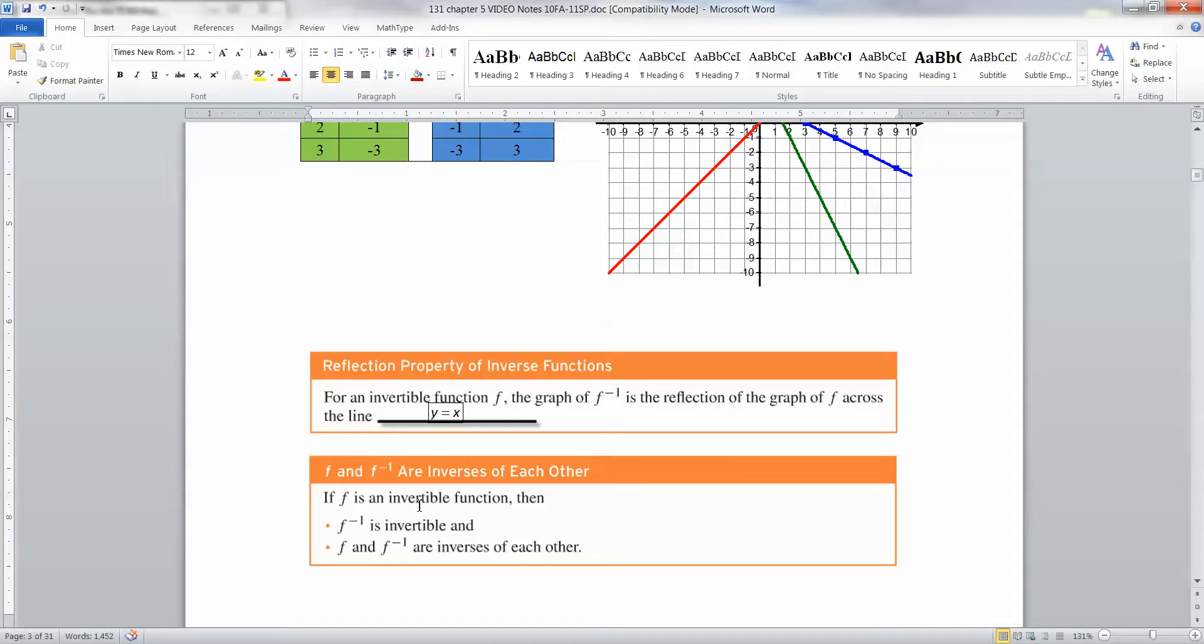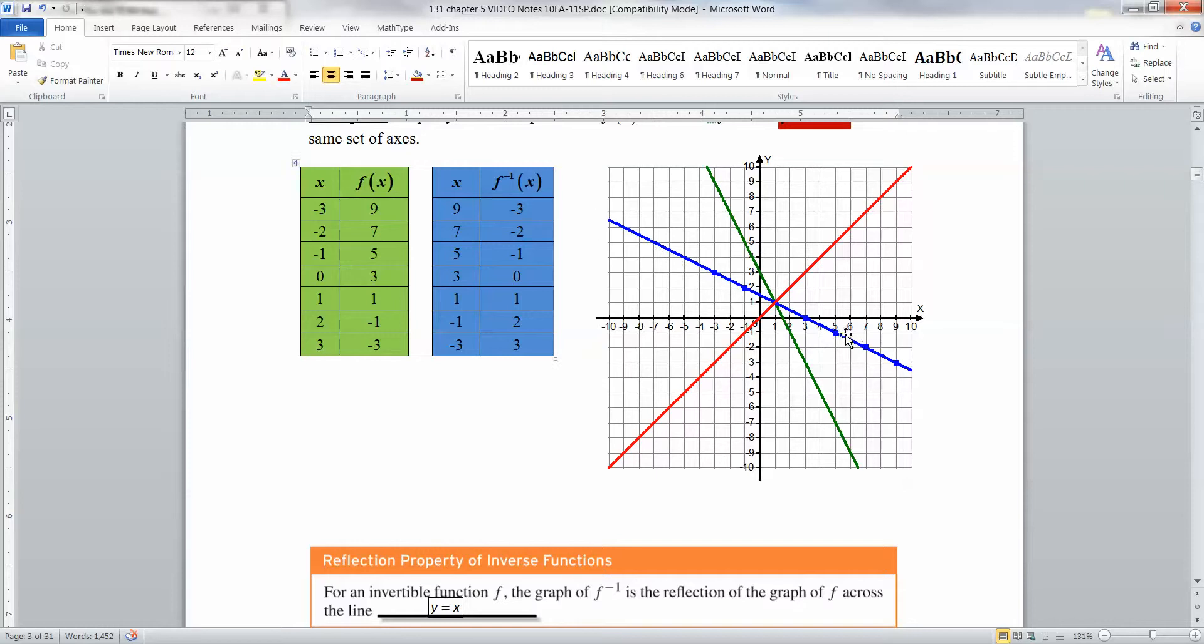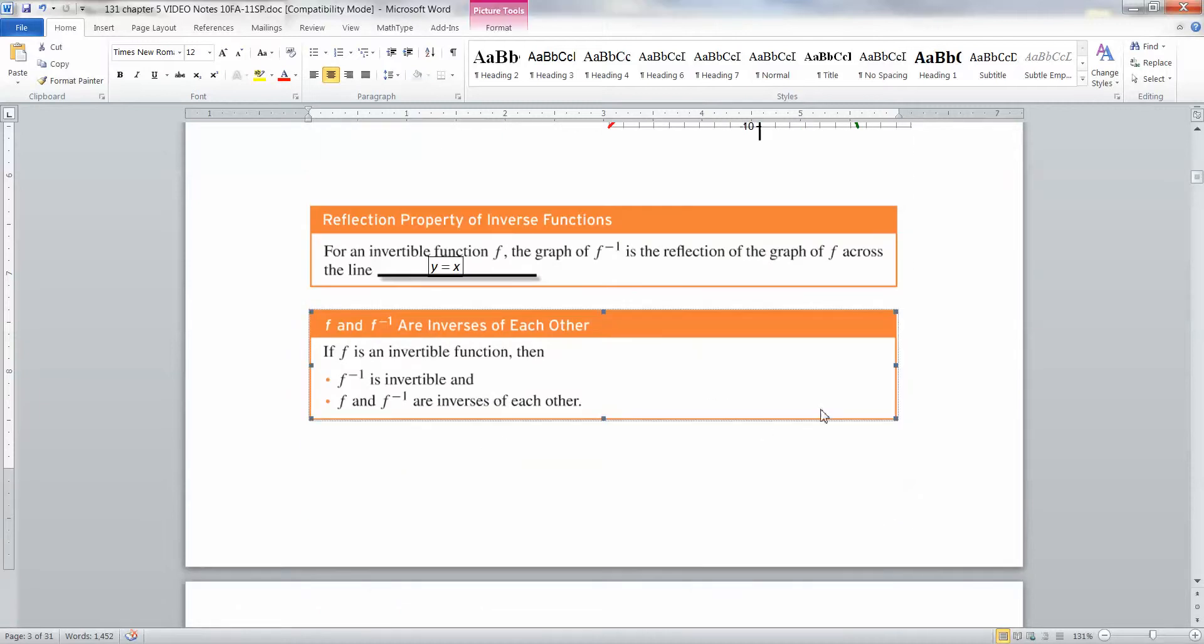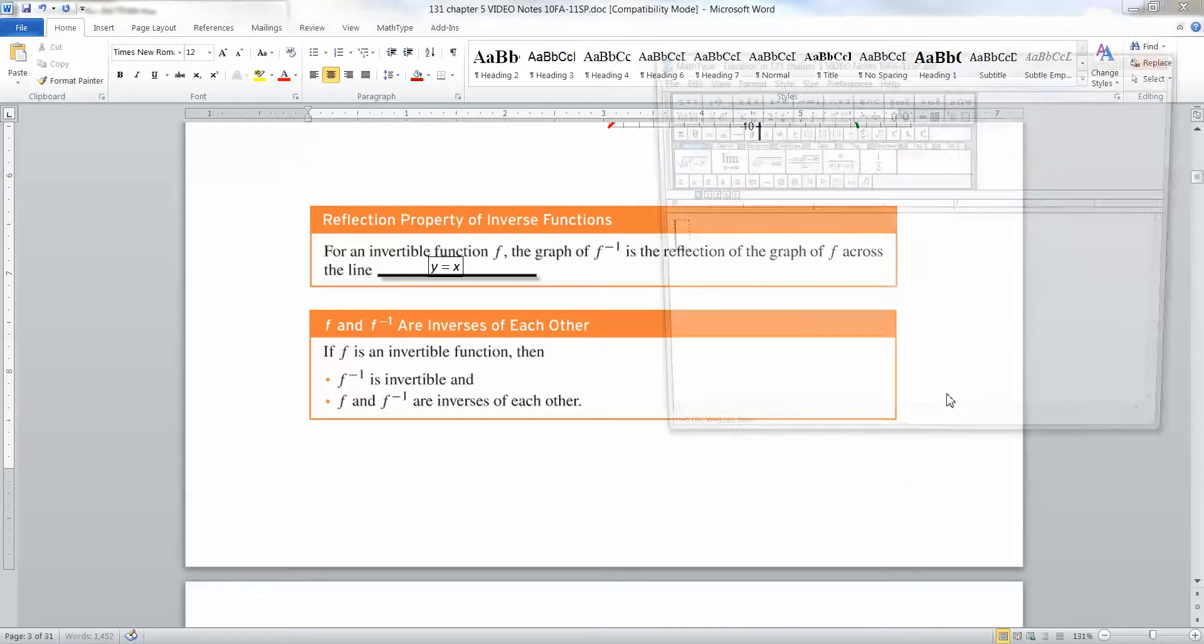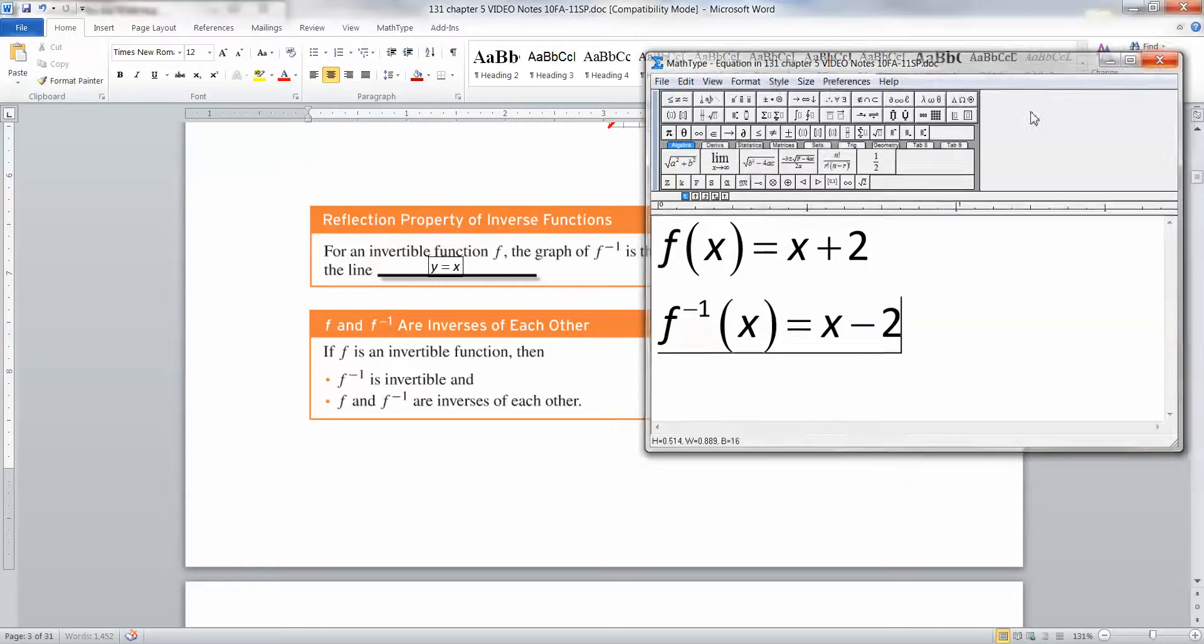So they're inverses of each other across the line y equals x. And that's the other thing to keep in mind, is that f and f inverse are inverses of each other. So f is one function, f inverse is its inverse. If f inverse was your starting function, let's say the blue one was your starting one, then the green one would be its inverse. They're inverses of each other. They unravel each other. So for example, if you had f of x equal to x plus 2, just for the sake of it, then the f inverse of x would be equal to x minus 2. They're opposites of each other.